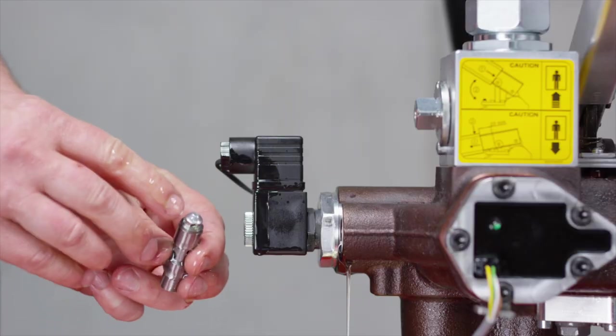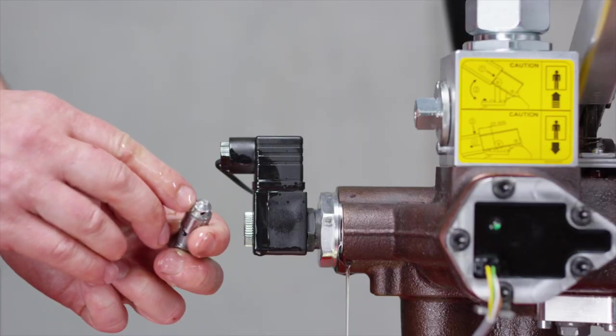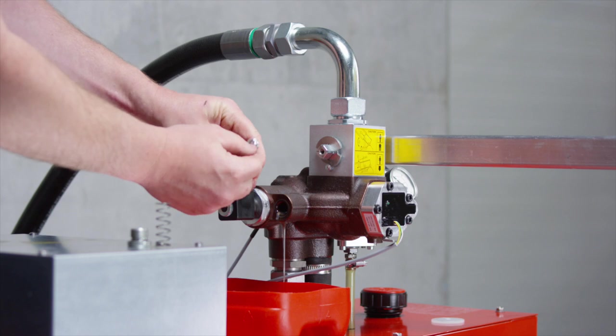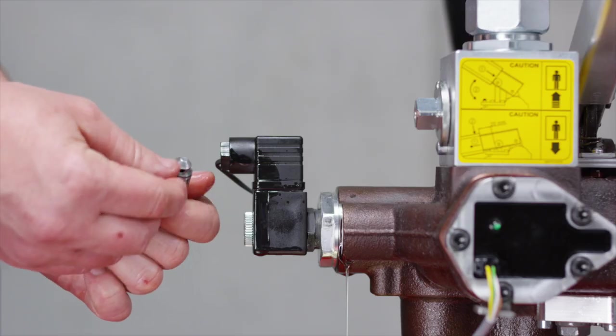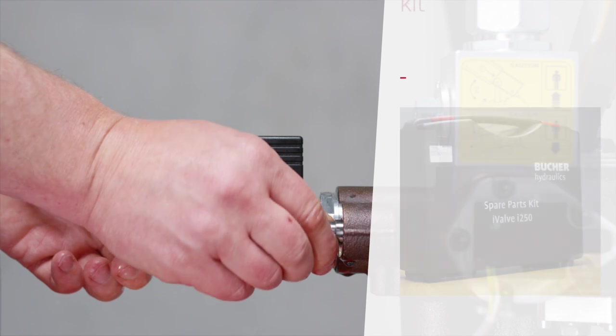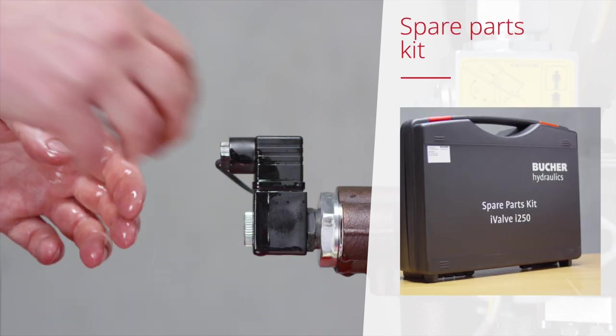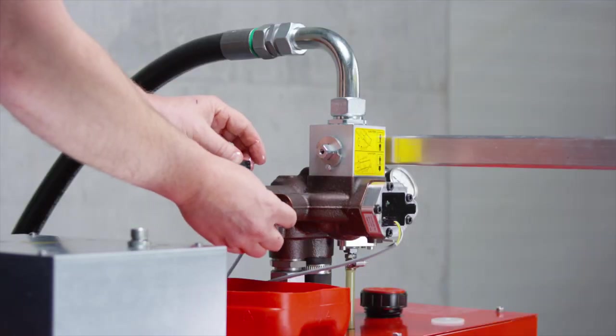Check sealing cone on directional valve for damage. If no damage is visible, clean the directional valve and reinsert it. In case of damage, use a new directional valve.